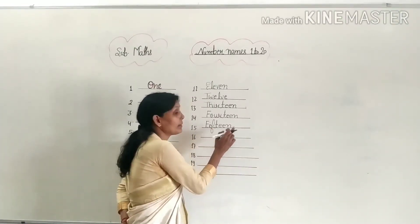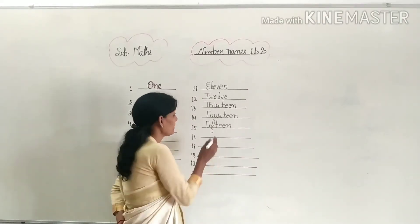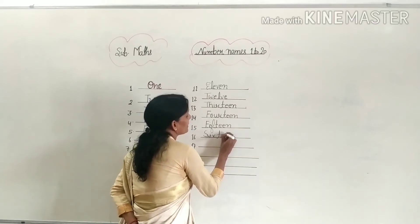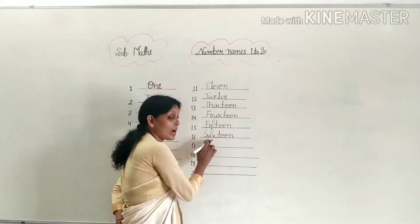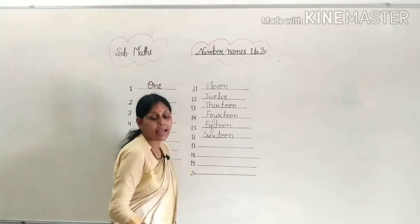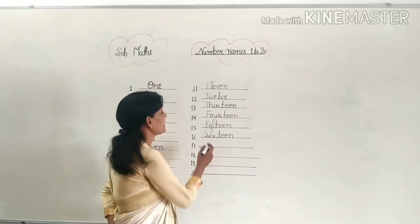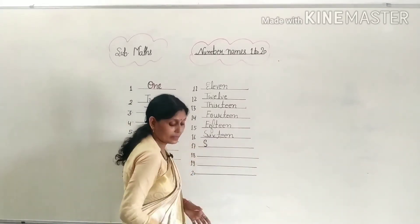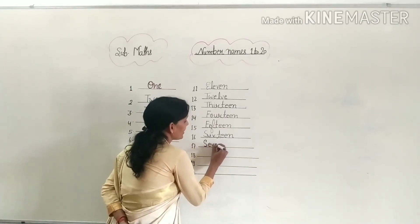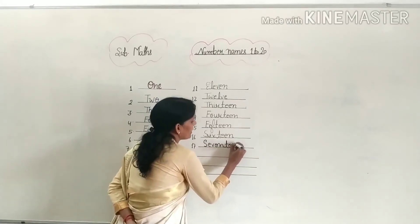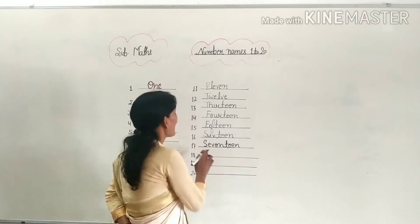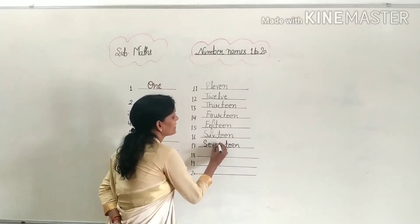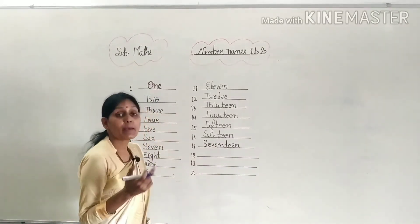Sixteen: S-I-X-T-E-E-N. What is the spelling of sixteen? S-I-X-T-E-E-N, sixteen. And seventeen: S-E-V-E-N-T-E-E-N. Note that it has an E — S-E-V-E-N — seventeen.